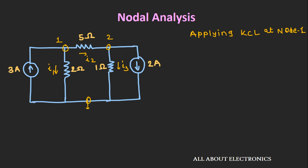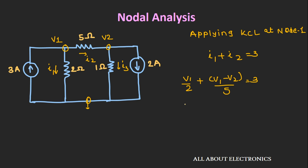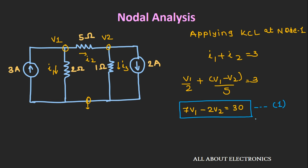Applying KCL at node number 1, we can write I1 plus I2 is equal to 3 ampere. Now if we apply Ohm's law, we can write I1 as V1 by 2 and I2 as V1 minus V2 by 5, where V1 is voltage at node 1 and V2 is voltage at node 2. If we simplify this circuit, we will get the equation: 7V1 minus 2V2 is equal to 30. Let's call this equation number 1.